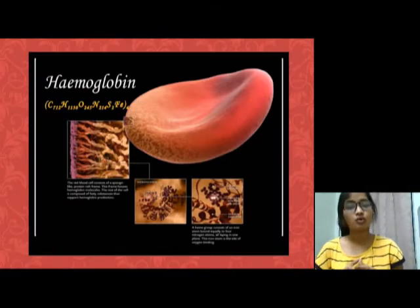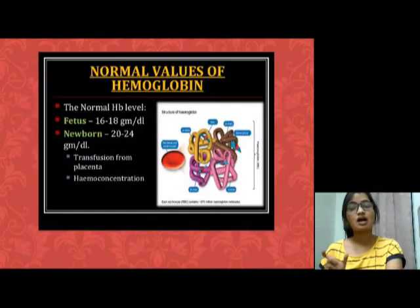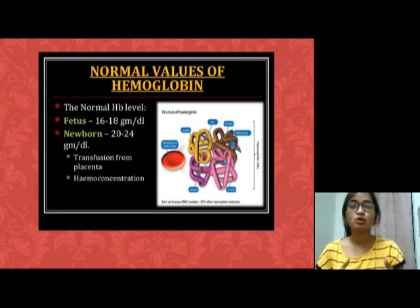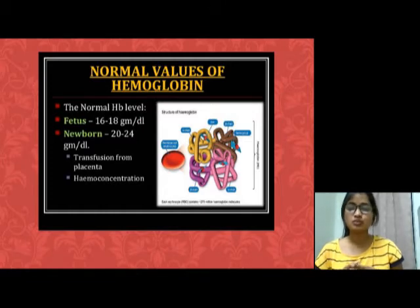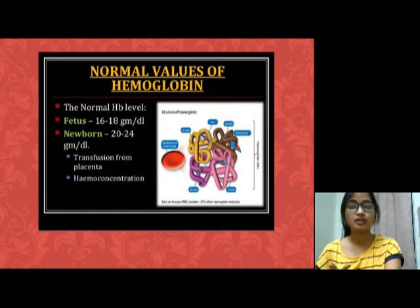Hemoglobin is concave in shape. Now I will explain the normal values of Hemoglobin. The normal Hb of the fetus contains 16–18 grams per deciliter. Newborn babies contain 20–24 grams per deciliter.